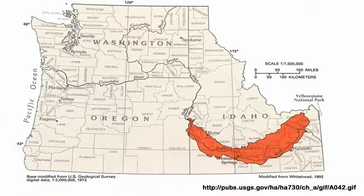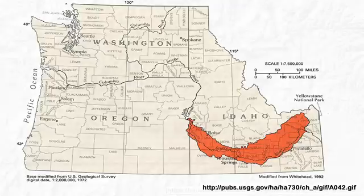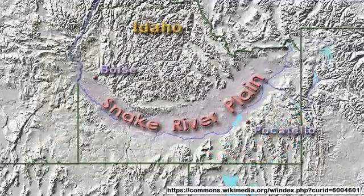The Snake River Plain is an arc-shaped depression with a concave side to the north. Covering almost a quarter of the state of Idaho, the Snake River Plain stretches about 400 miles from the Idaho-Oregon border eastward to the northwest corner of Wyoming.